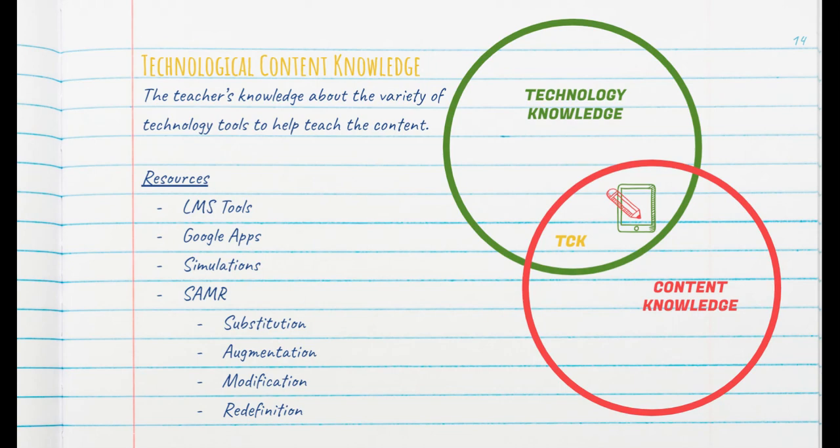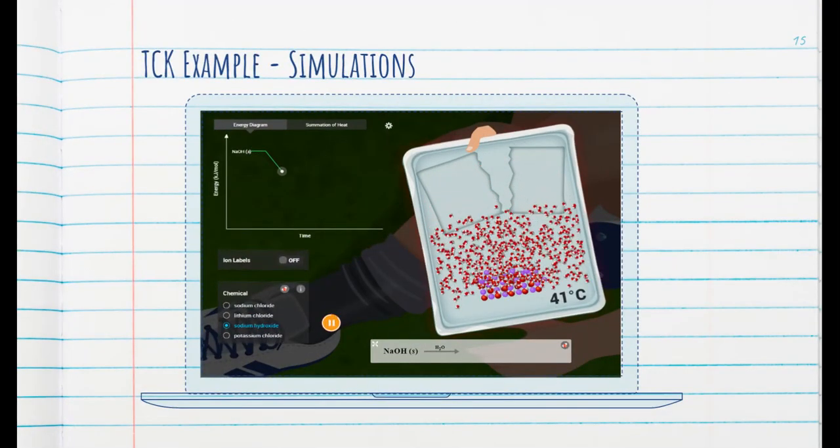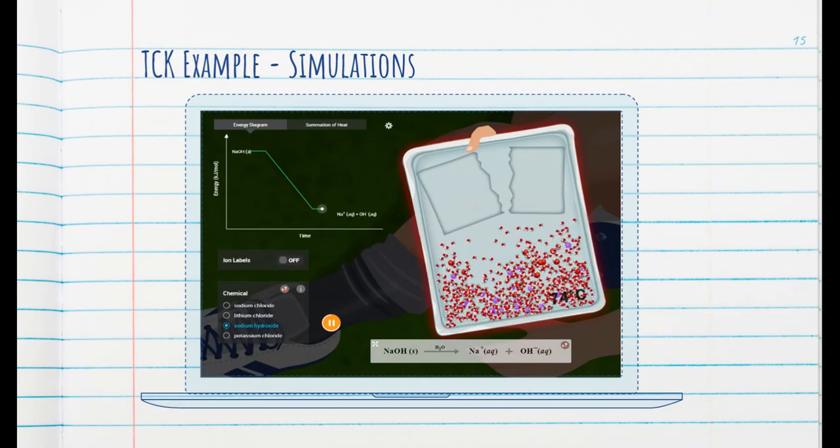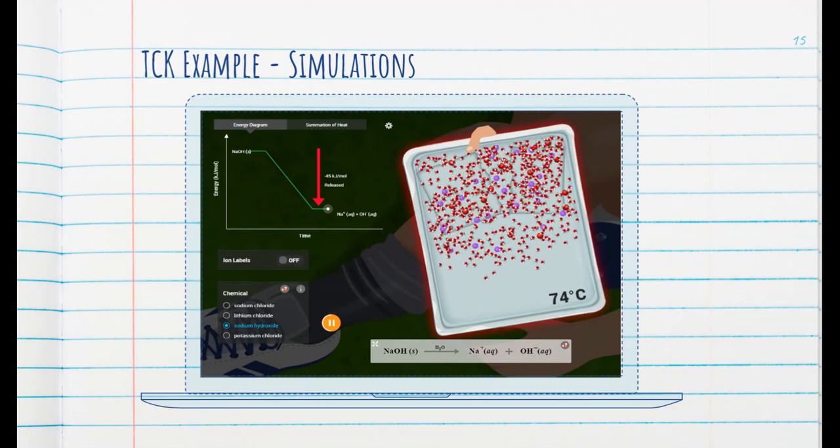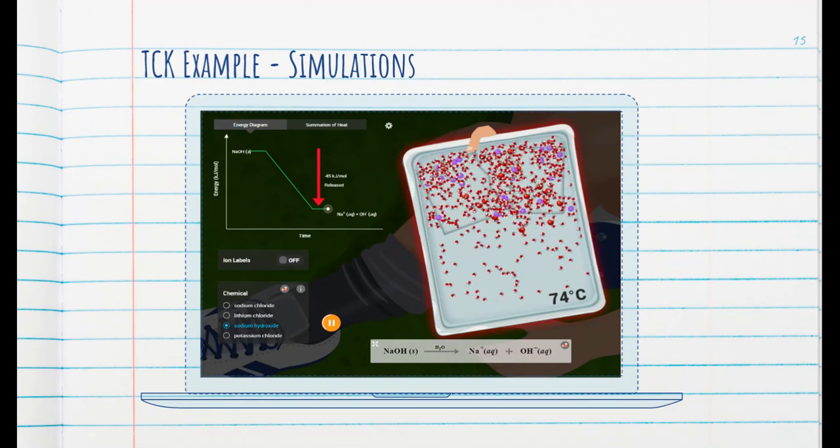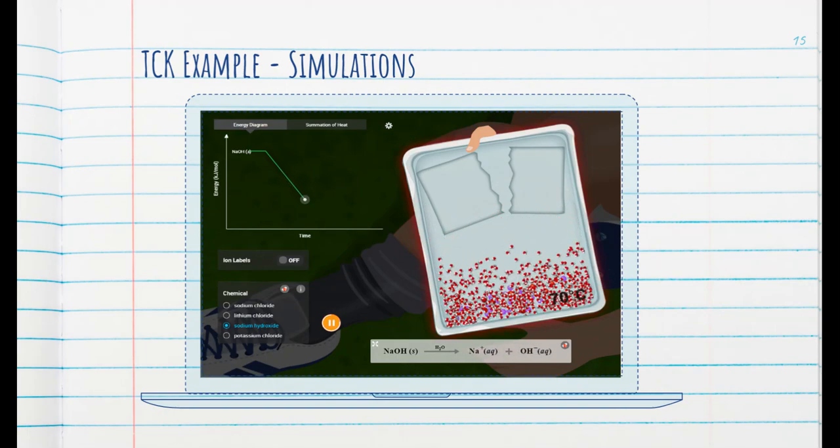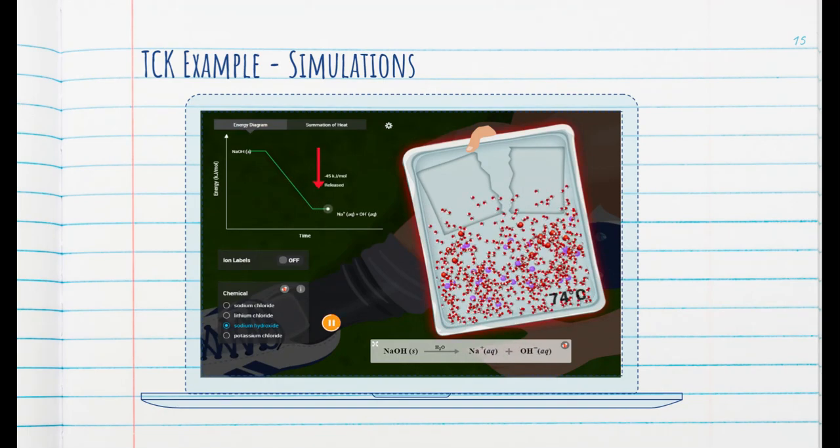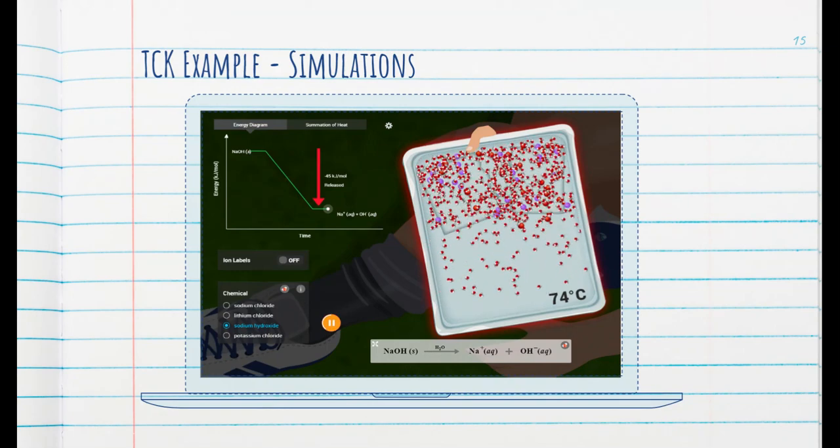SAMR stands for substitution, augmentation, modification, and redefinition, and are things to consider when teachers utilize online content. My success in TCK examples or technology content examples is the utilization of simulations. I love simulations, and I find that they really work well to help students visualize the content and interact with it. Many of the simulations aren't passive. They're able to manipulate the data to explore and apply many modalities of learning when doing so.